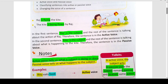In the second sentence, kite is the subject. इस second sentence में the kite हमारा subject हुआ। Subject मतलब जिसके बारे में हम बात करते हैं। यहाँ पर second sentence में हम kite के बारे में बात करते हैं। So, kite is the subject and the rest of the sentence — is being flown by Raj — is talking about what is happening to the kite. Therefore, the sentence is in the passive voice.